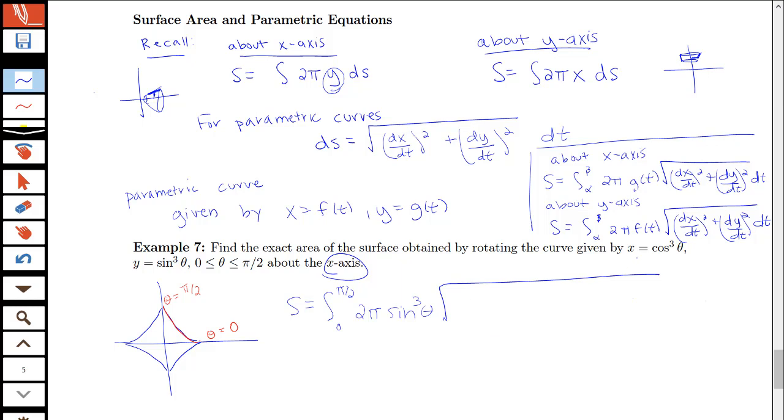And then times the square root of dx/dθ squared plus dy/dθ squared. So my dx/dθ will be 3 cosine squared θ times negative sine θ squared, and then my dy/dθ will be 3 sine squared θ times cosine θ squared dθ. So that's my complete setup for my surface area.